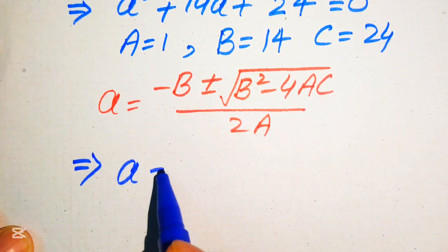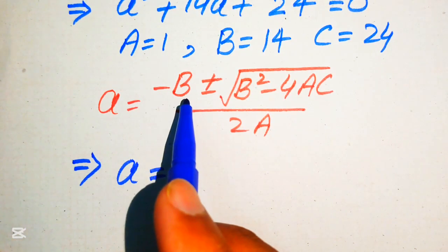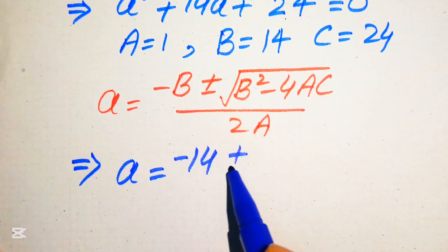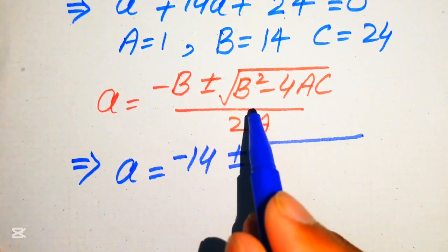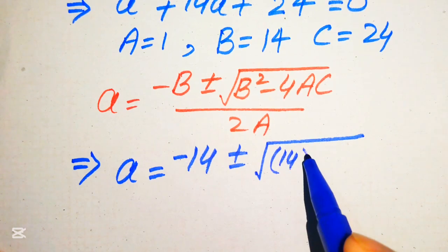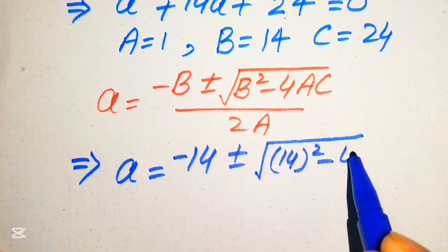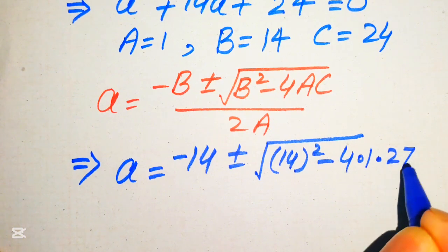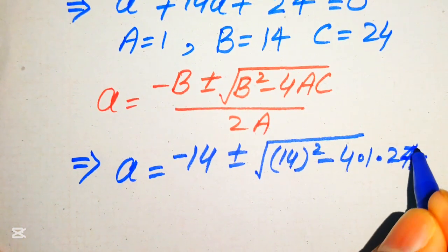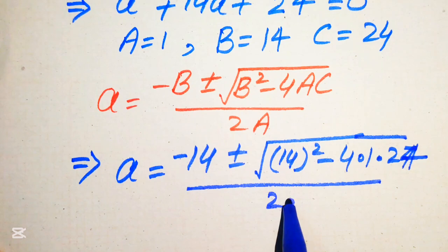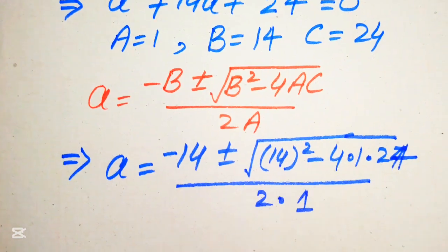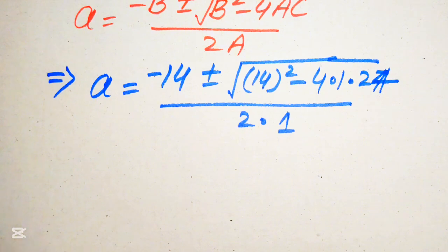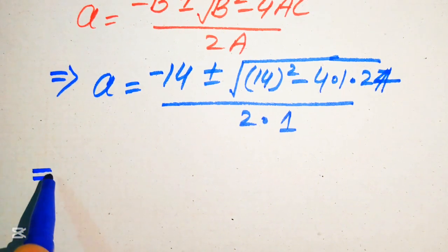Substituting: a = (−14 ± √(14² − 4·1·24)) / (2·1). So a = (−14 ± √(196 − 96)) / 2.